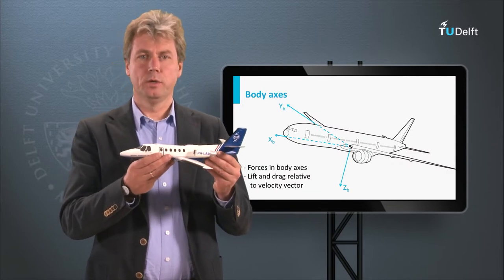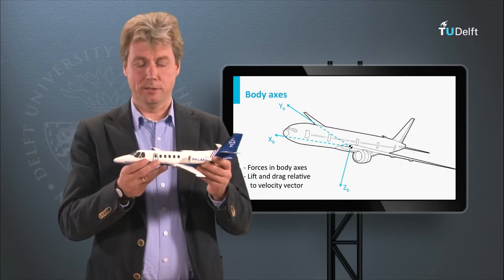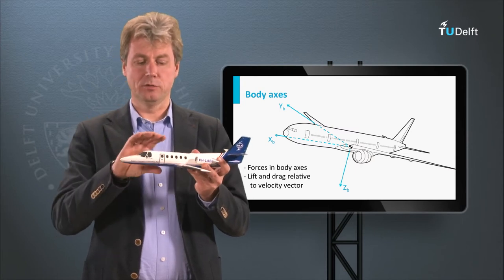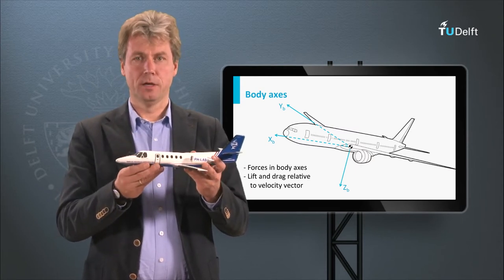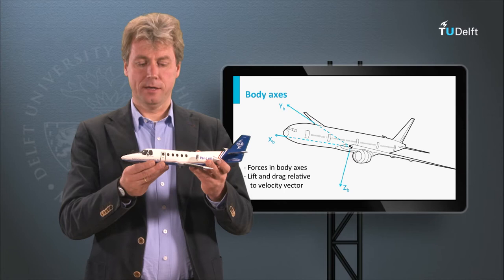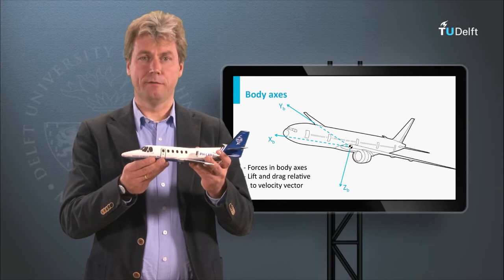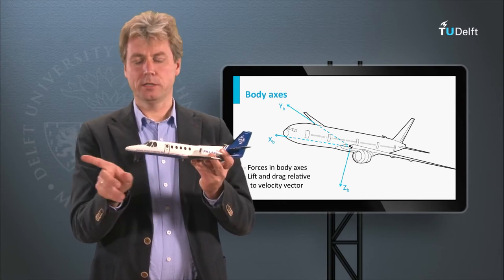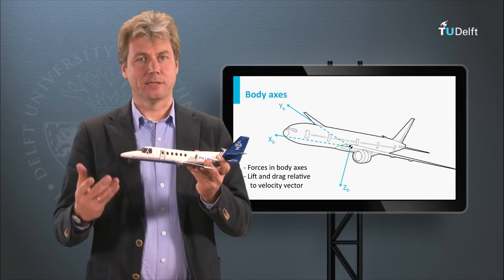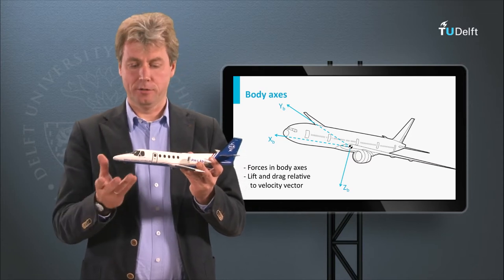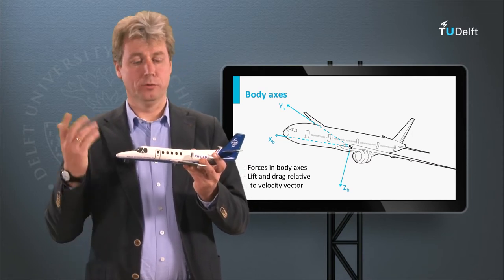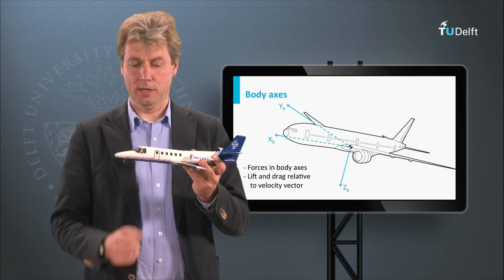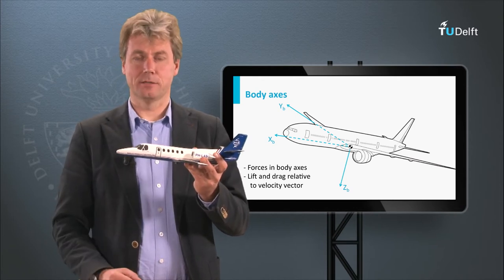Let's first look at what we call the body axis, because there is a reference system attached to the body of the aircraft. We have a number of axes there. We have the forward direction, which we call the X axis. The first axis is the one that points forward — the most important direction for flight, as you can imagine. So the forward direction is X.